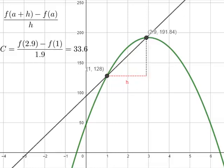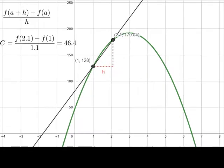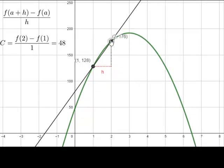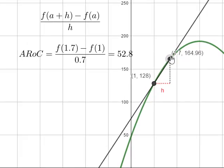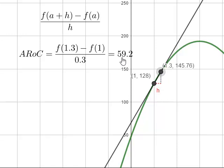So what we want is to let h get smaller and smaller until we have the second point on top of the first point. So we can see h getting smaller and smaller, and we're getting closer and closer to the instantaneous rate of change.